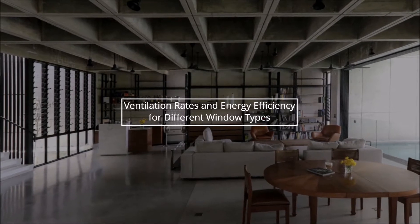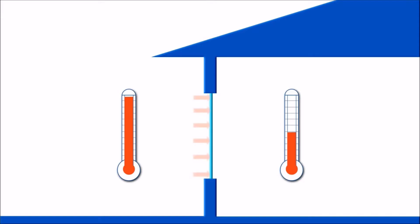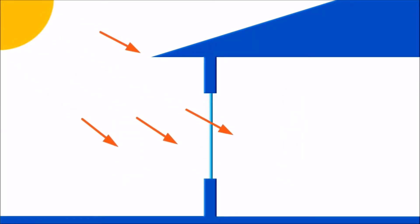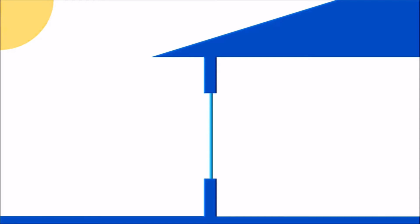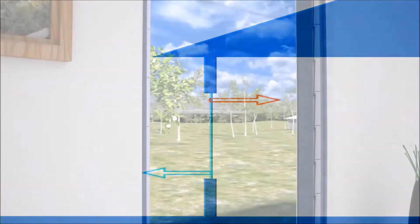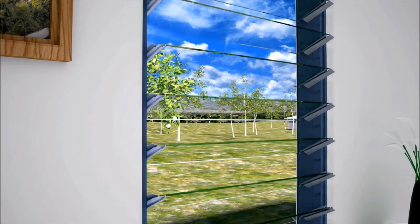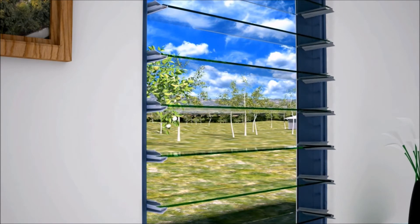Discussions of the energy efficiency of windows generally revolve around how well the window insulates against heat transfer, how much solar heat gain comes through the window in the form of sunlight, and how tightly the window seals against air infiltration. While these are important measures, they ignore the fact that one of the primary functions of a window is to open up and let fresh air in to naturally cool and ventilate a building.